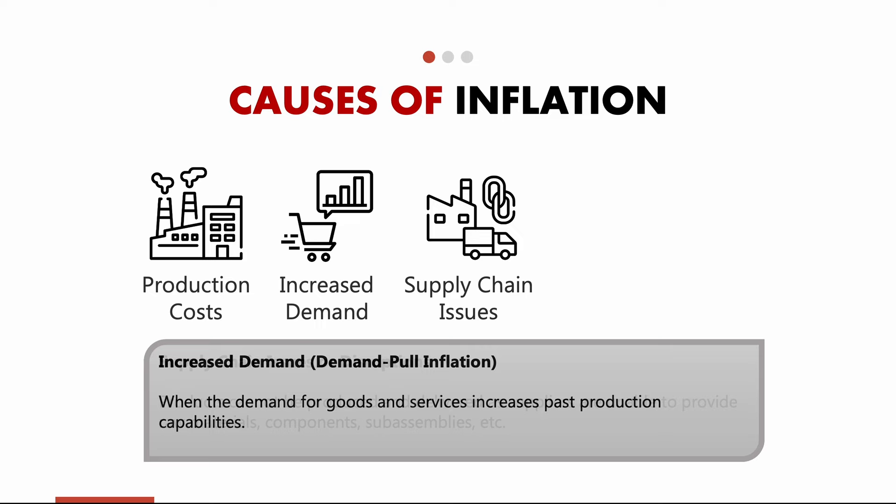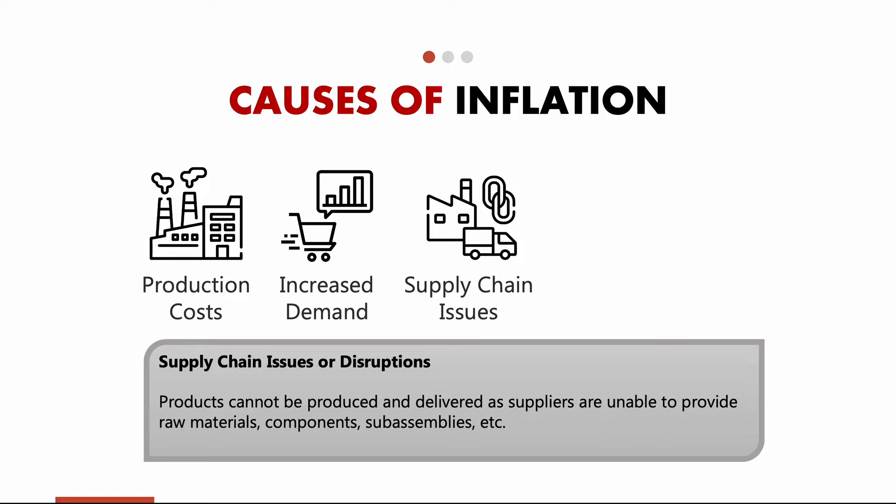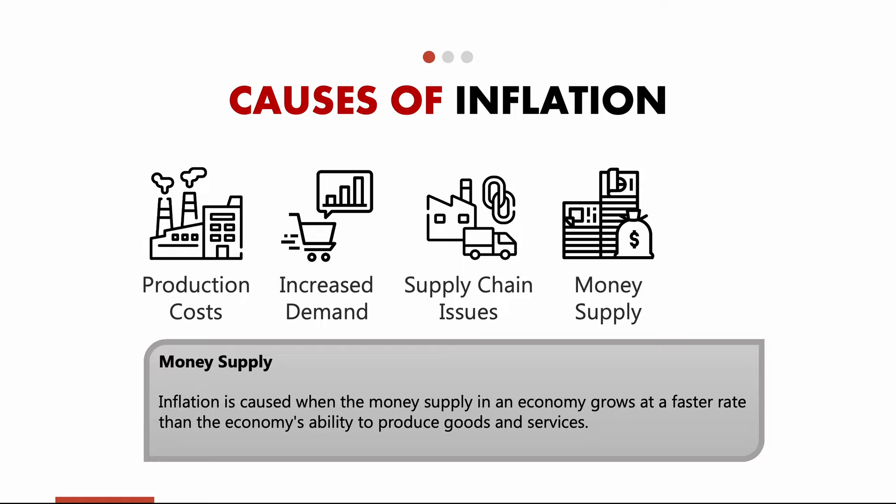The third cause is supply chain issues — when suppliers are not able to provide raw materials, components, or sub-assemblies to producers. For example, US automakers weren't able to manufacture cars because semiconductor chips used in cars were not supplied from China, due to COVID impacting their port operations. Additionally, the Federal Reserve printed trillions of dollars in stimulus checks during the pandemic. The economy was not able to produce goods and services at a normal rate, and too much money supply caused inflation.